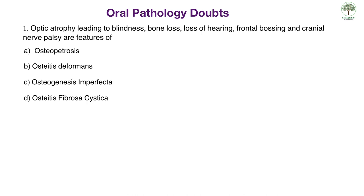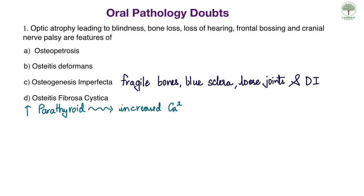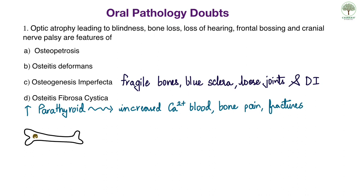We can immediately rule out options C and D. Osteogenesis imperfecta causes fragile bones, blue sclera, loose joints and dentinogenesis imperfecta. Osteitis fibrosa cystica is seen in hyperparathyroidism where rising serum calcium levels lead to bone pain and tenderness, and in the final stages brown tumors appear in bone.